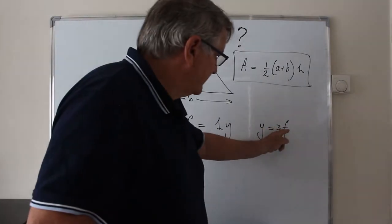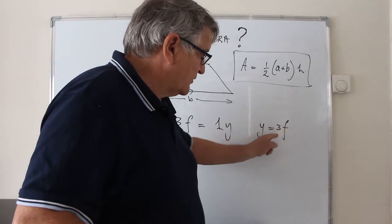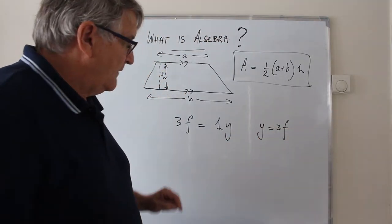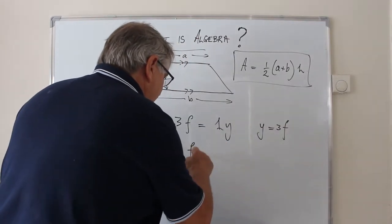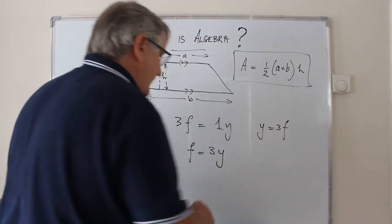If I've got 12 feet, I certainly don't have 36 yards. What we should be saying is that the number of feet is equal to 3 times the number of yards.